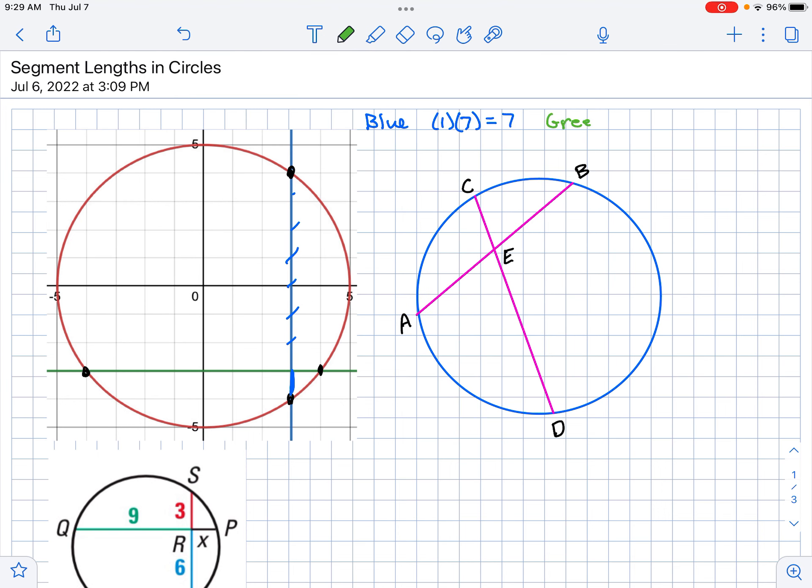Now let's look at the green. Same thing. To the right is one, and to the left is one, two, three, four, five, six, seven. So we get seven. Now notice both products are the same. They're both seven.